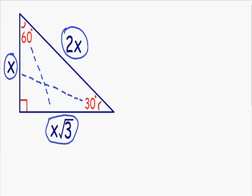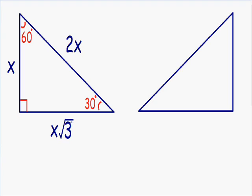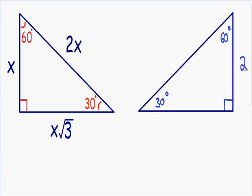Let's get started with an example — an easier one. Let's say that this angle is 30 degrees, this angle is 60 degrees, and we know that this angle is 90 degrees. This is an easy example because they give us the value opposite of the 30-degree angle, or the value of the shortest side. Let's say that the length of the shortest side is equal to 2. We know that the length of the shortest side equals our x, so x is equal to 2.